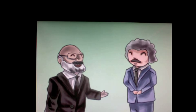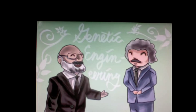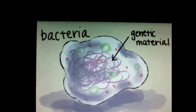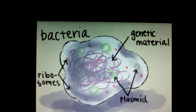Then, in 1973, Cohen and Boyer were the first to genetically engineer a transgenic organism, thus creating genetic engineering. It all started with a bacteria. The bacteria contains genetic material, plasmids, and ribosomes.